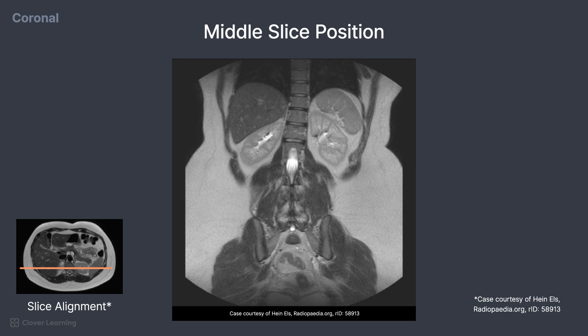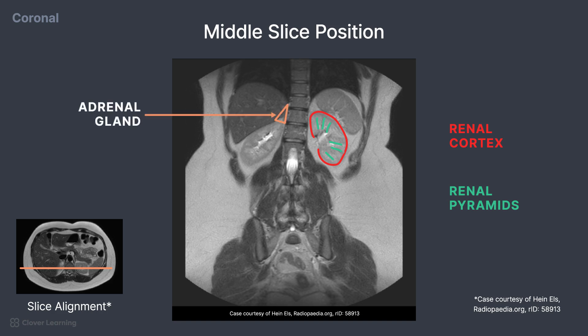More details of the kidneys are demonstrated here, including the cortex, or outer covering of the kidney, and the renal pyramids, the more inner portion of the kidneys. On the right side, the triangle-shaped adrenal gland can be seen superior to the kidney.